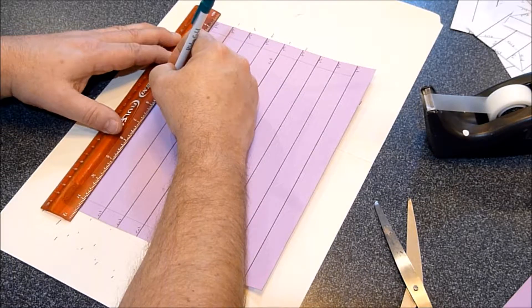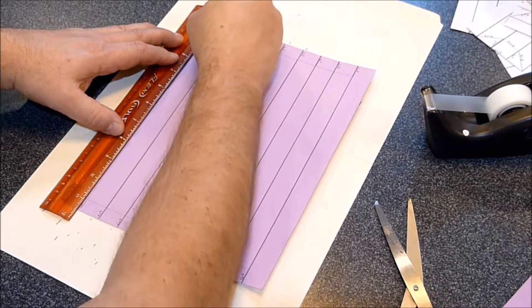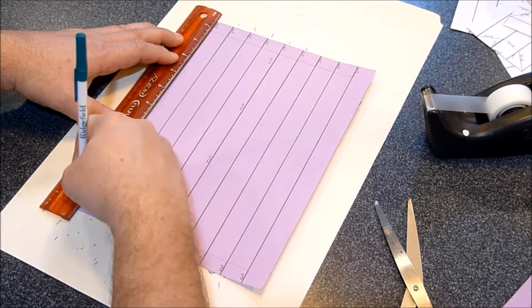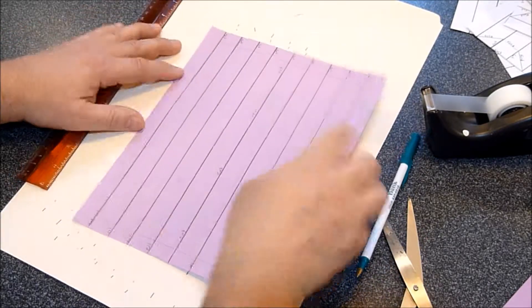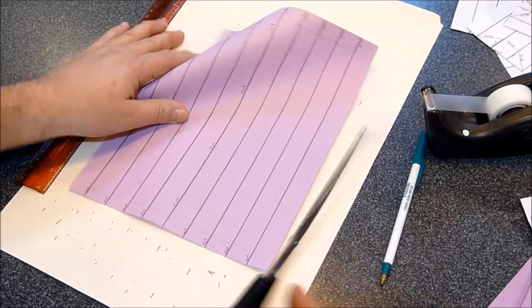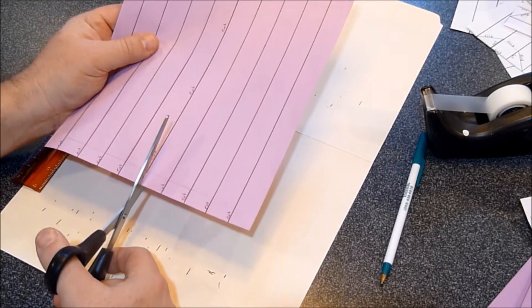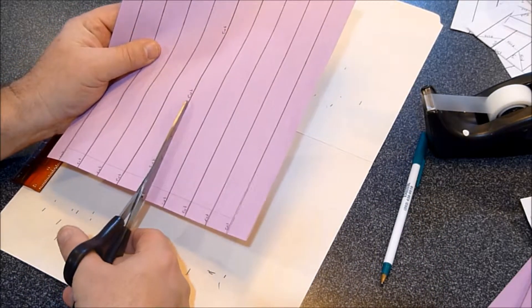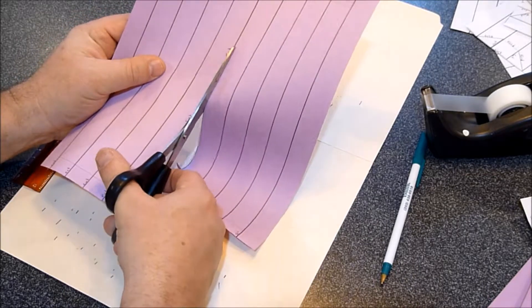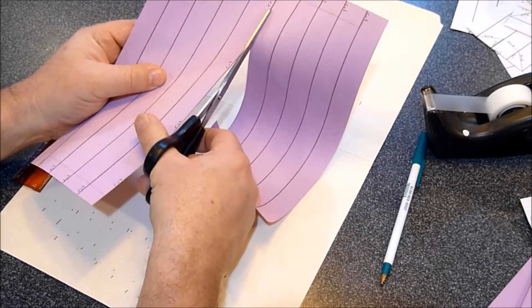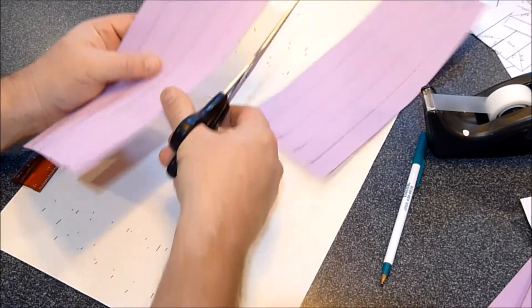So I've scored the template and this template makes two vertical beams. So I'm just going to cut down the middle where it says cut.